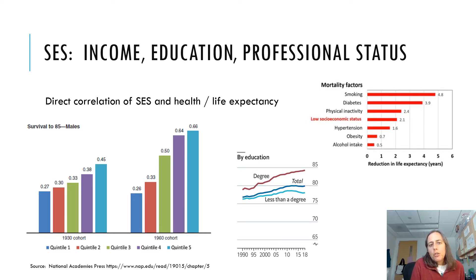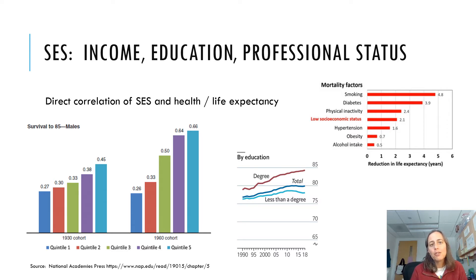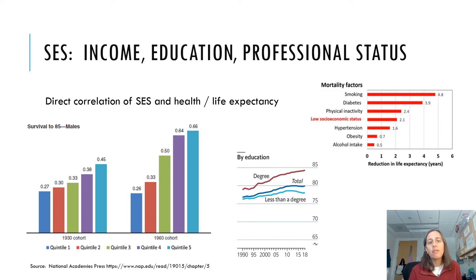This chart shows how big an impact low socioeconomic status actually has on life expectancy compared to other health behaviors. Smoking is one of the biggest things you can do to put yourself in an early grave — almost five years off your life expectancy. We also see diabetes and physical inactivity. But having low socioeconomic status is just as bad as not exercising, and far worse than being of a large body size. Obesity gets a lot of press, but it's actually much less of a problem than low socioeconomic status or physical inactivity.